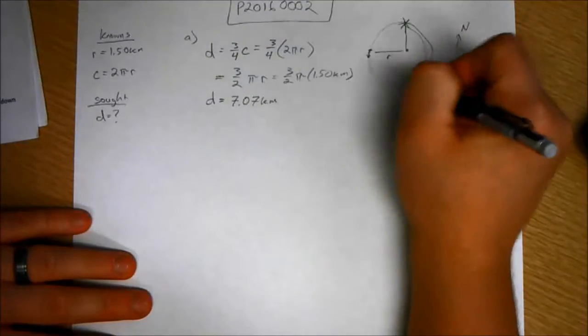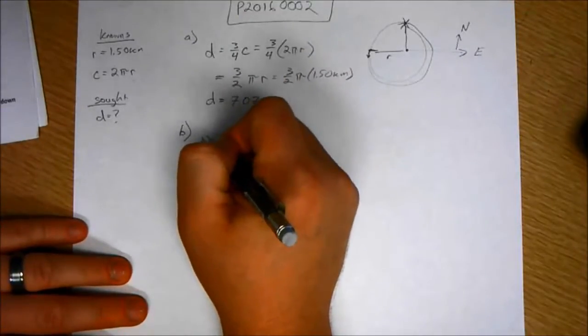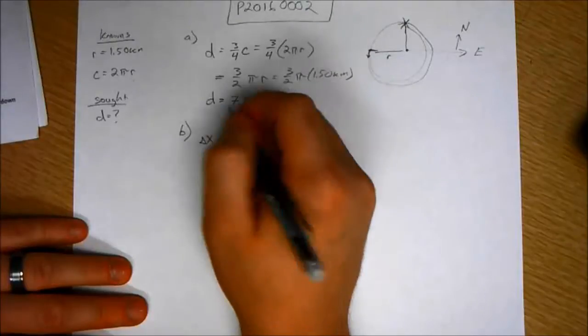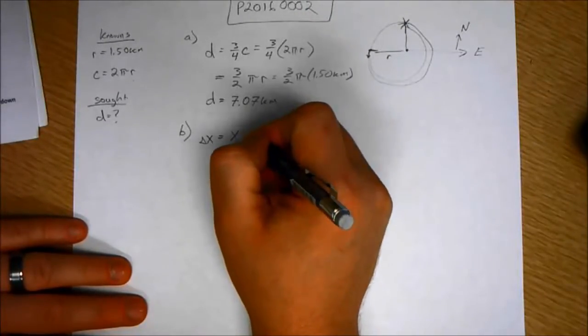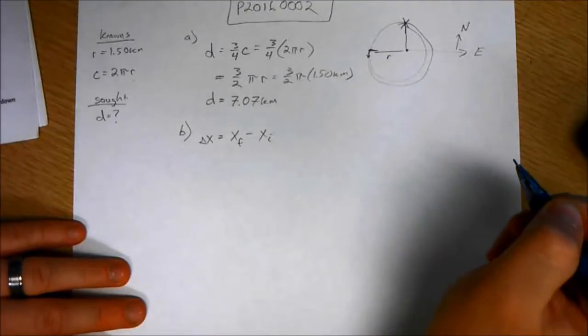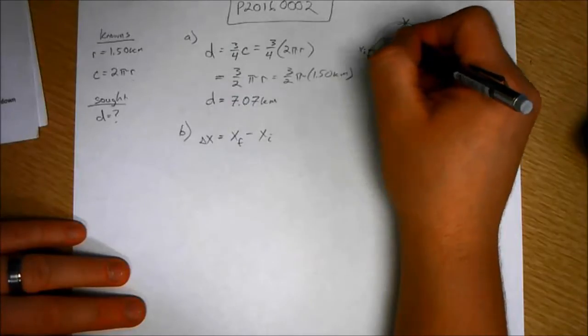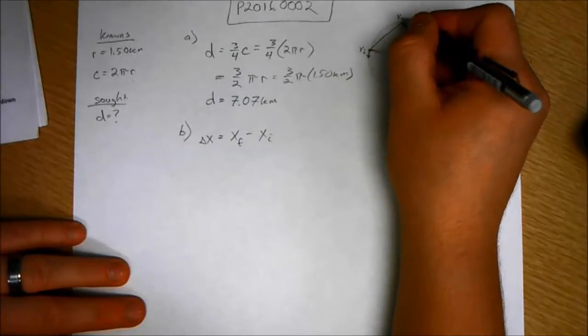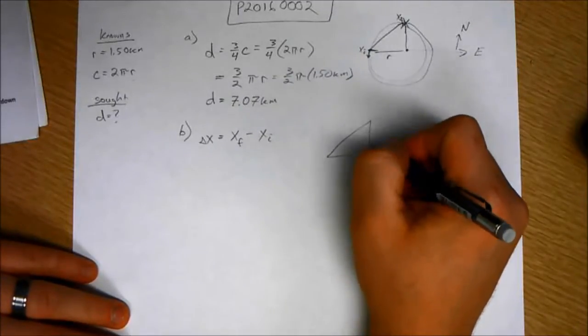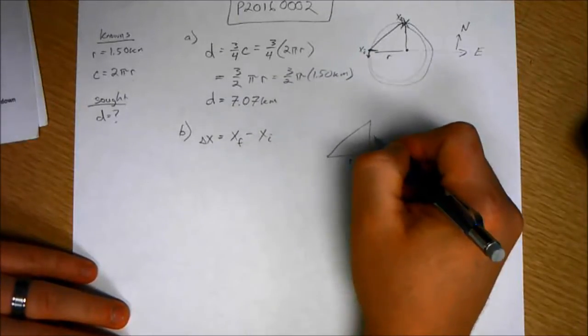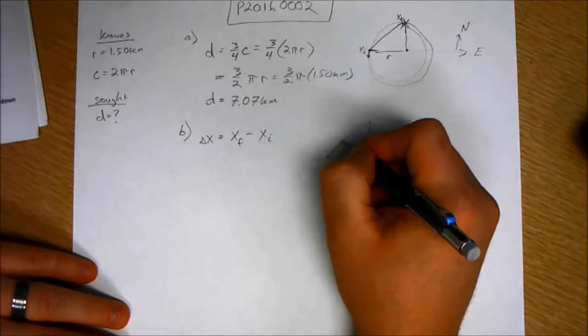Well, this is the distance traveled, but the displacement, delta x, is going to equal, it is just simply x final minus x initial. So from this point, x initial, to this point, x final. So that is a triangle. Each leg of the triangle is equal to, the length is equal to r, and we just need to find the hypotenuse. This is delta x.